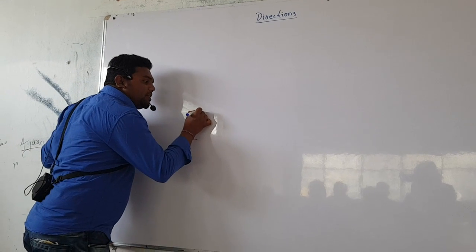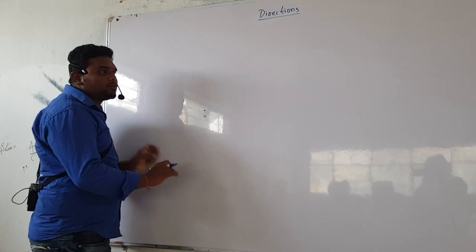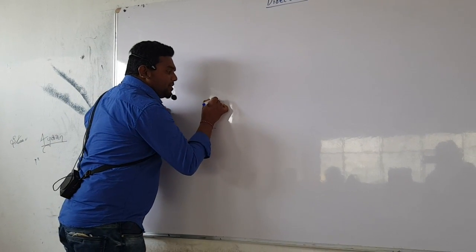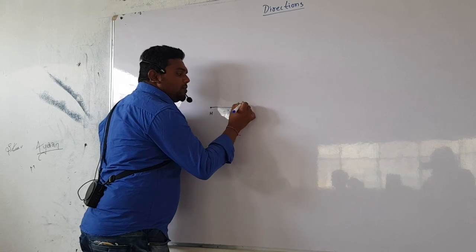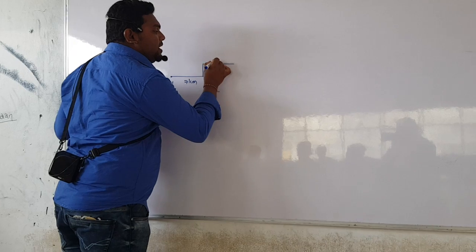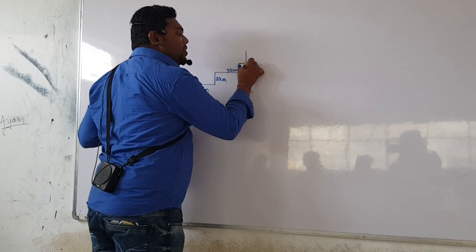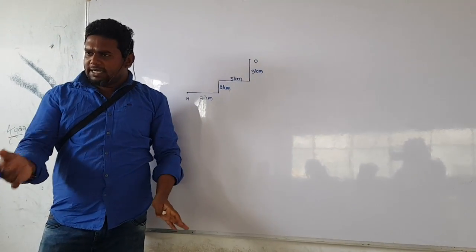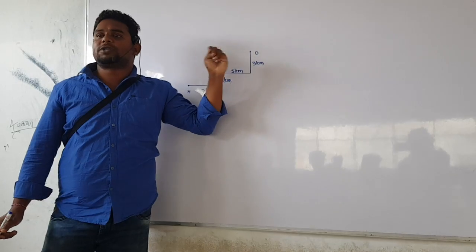A person starting from his house travels a distance of 7 km towards east, then travels 2 km towards north, then travels another 5 km towards east, and finally he travelled 3 km towards north to reach his office. This is the office and this is the house.